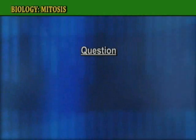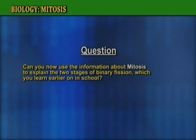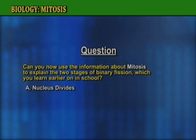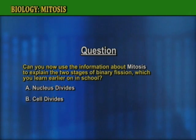Question: Can you now use the information about mitosis to explain the two stages of binary fission which you learned earlier on in school? A: Nucleus divides. B: Cell divides.